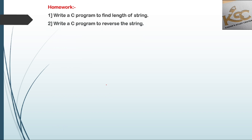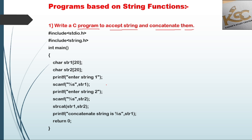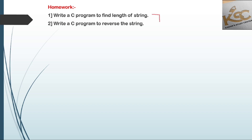We have covered two programs in this lecture. Two more programs are given as homework. They are simple — just change the function. First program: accept one string and find its length using strlen. Second program: accept one string and reverse it using strrev. Only one string is needed for each. Use strlen for length and strrev for reverse.